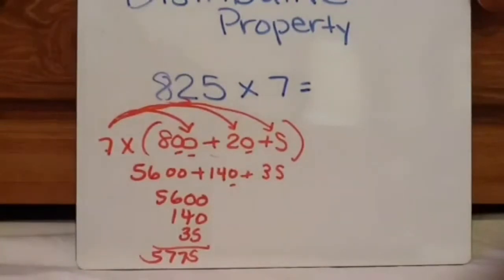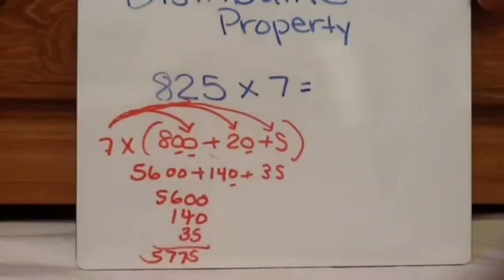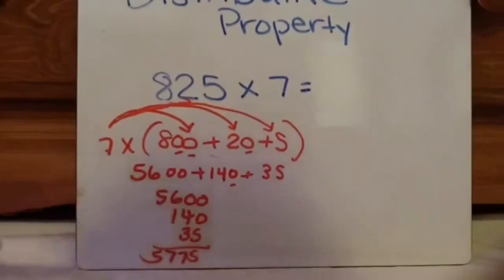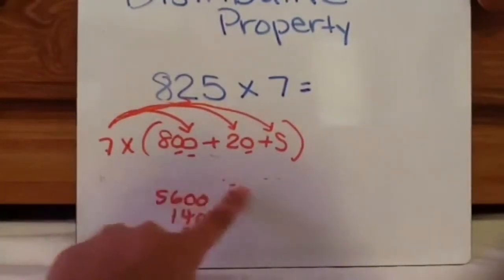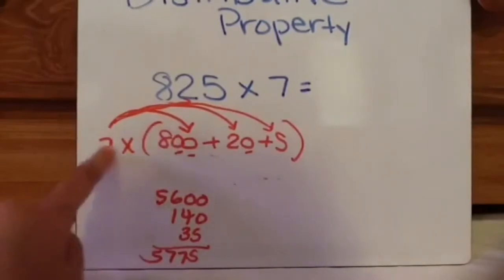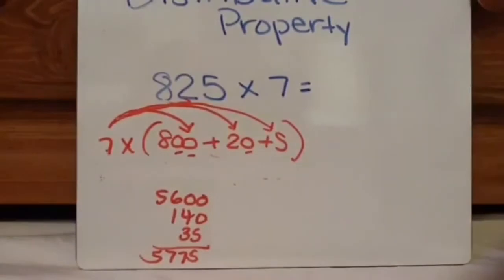So when my students are first learning how to do this, I make them write this and this and then add it up and down. That helps, and then gradually I tell them, skip this step altogether. And, 7 times 800, write it like this, 7 times 20, write it over here, 7 times 5, write it over here, and then you just add them up and down.